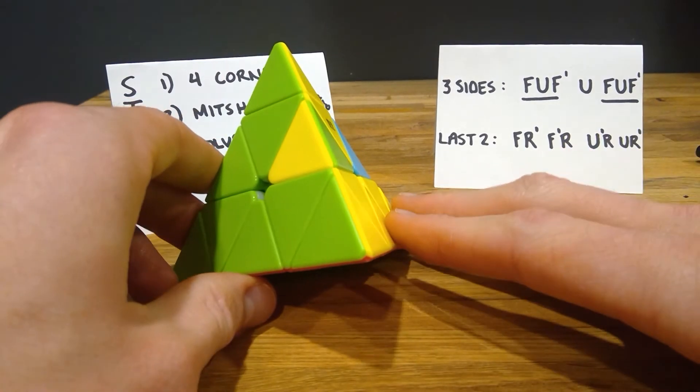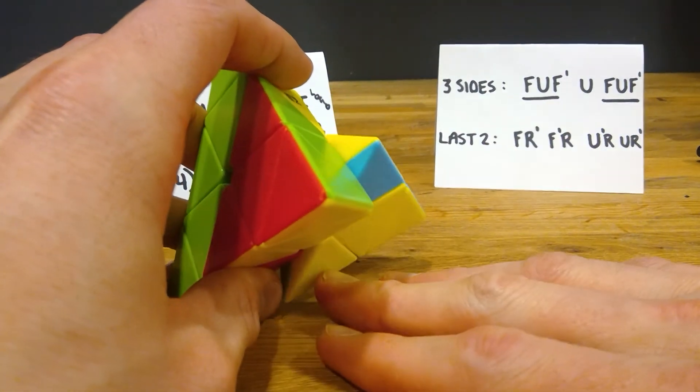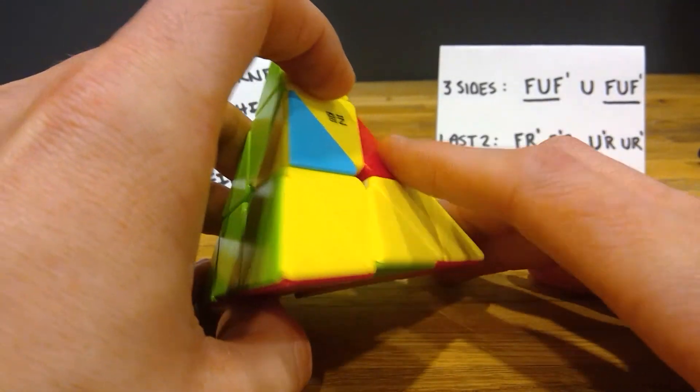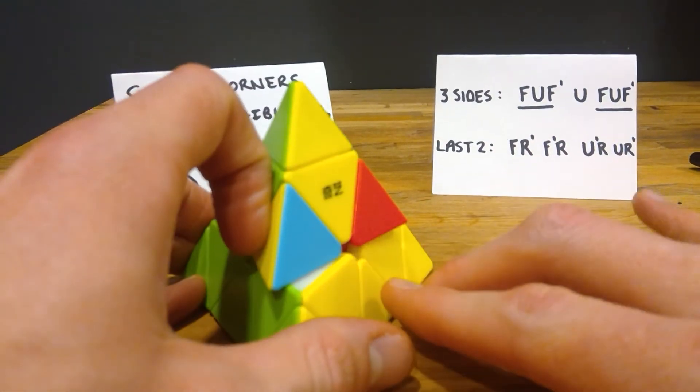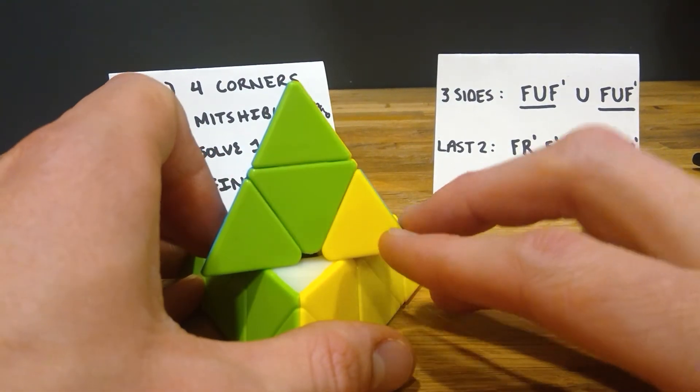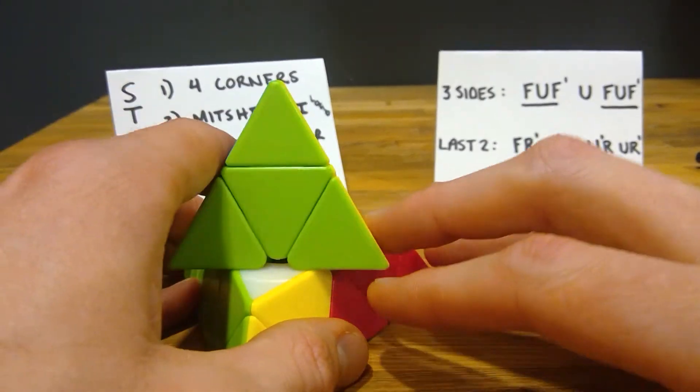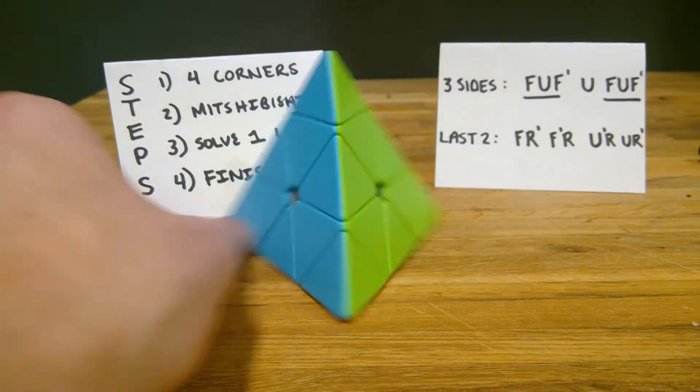Here we go. Let's do this algorithm together. F, R prime, which is counterclockwise, F prime, which is counterclockwise, R, U, which is up. Oh, sorry, that's U prime. So, this way, not the way I started doing it. R, U, and then R prime. And we've solved it, which is terrific.